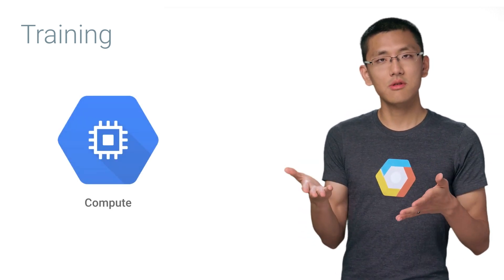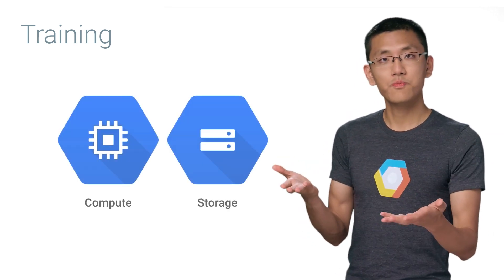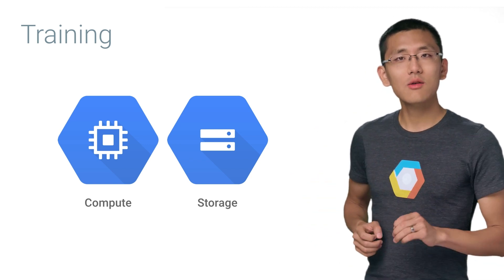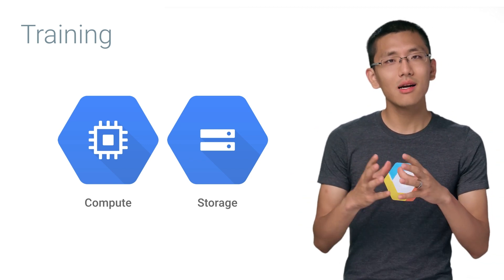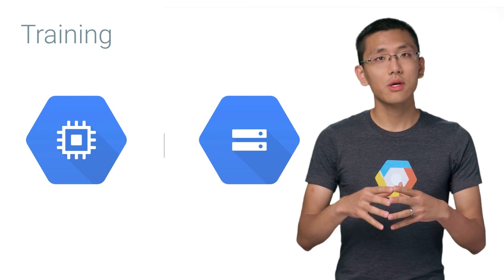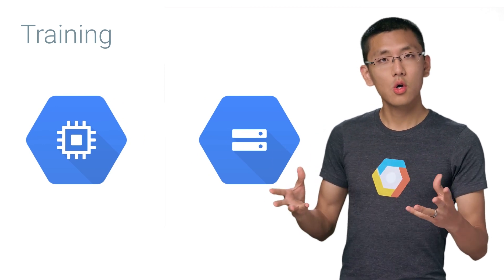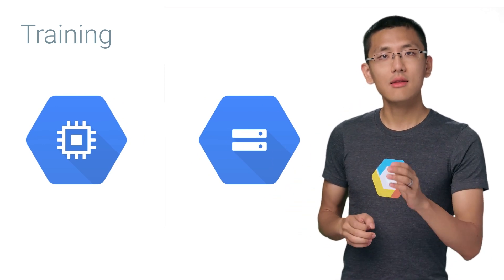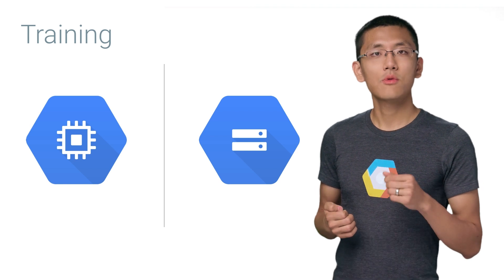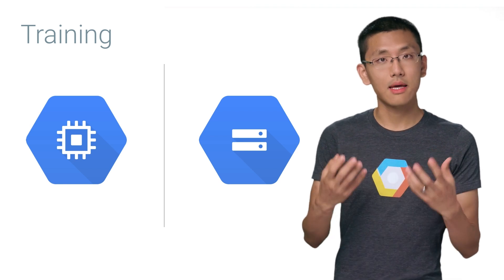Let's break down exactly what parts need to be moved into the cloud. It's useful to think about our training as needing two primary resources: compute and storage. What's interesting is that we don't have to tie them together quite as tightly as you might expect. We can decouple them, which yields specialized systems for both, and this can lead to efficiencies of scale when you're dealing with big data.